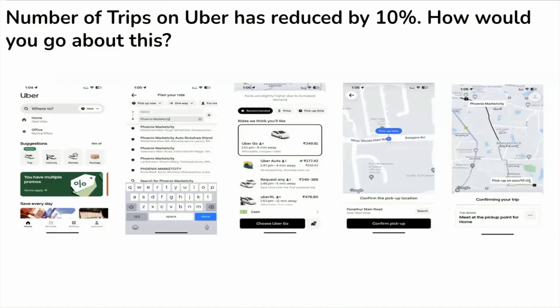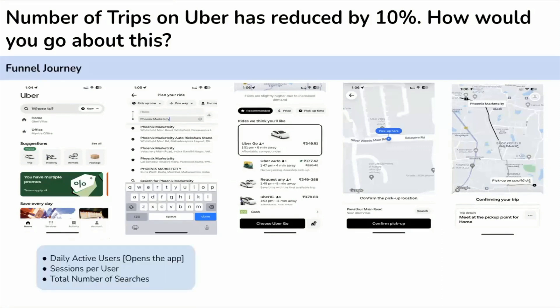Now let's look at the metrics in the funnel. At the top of the funnel, we look at daily active users — users who opened the app at least once a day — sessions per user, and number of destination searches per session. These metrics tell us whether the intention of using Uber has gone down. The interviewer told us there is a slight drop of 1-2%, not the 10% drop in the question. So we keep that in mind and move further down the funnel.